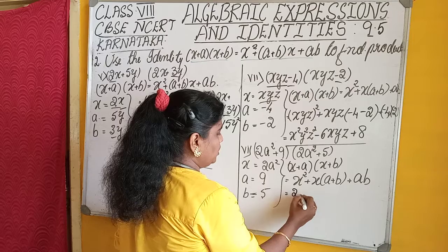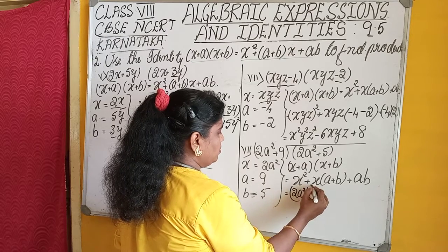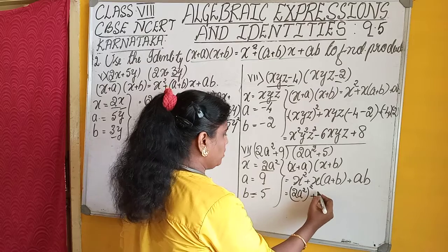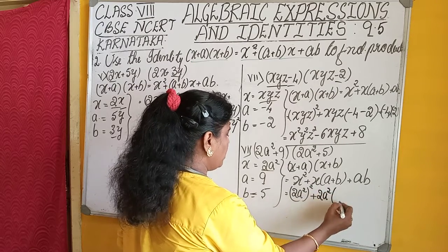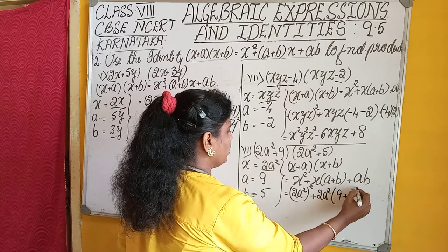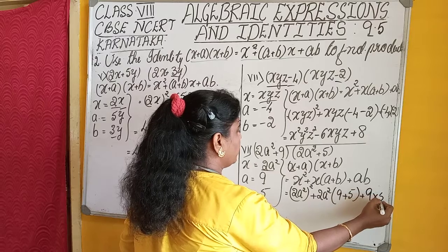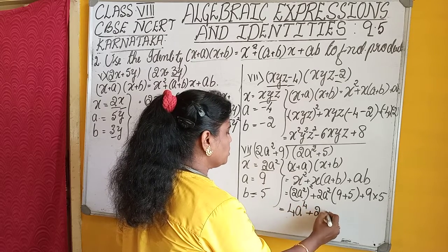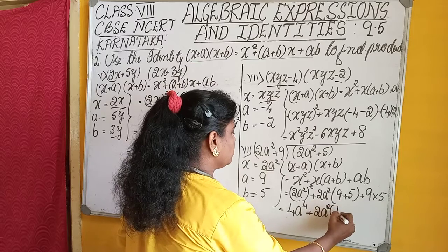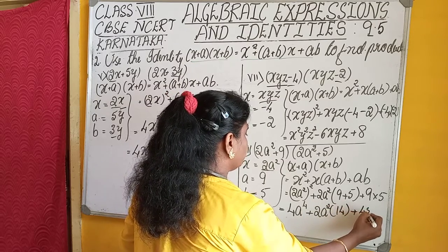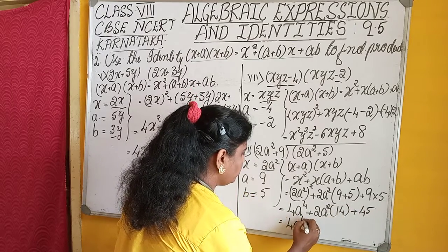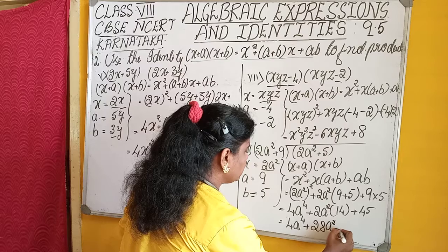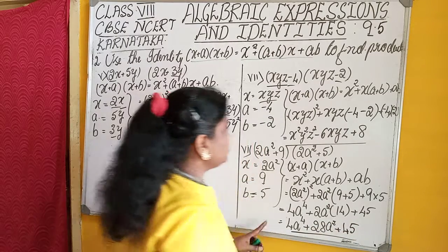In place of x we write 2a², so we get (2a²)² plus 2a² into (9+5), plus 9 into 5. That is 4a⁴ plus 2a² into 14, plus 45. Equals 4a⁴ + 28a² + 45. I hope you understood.